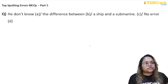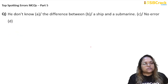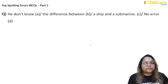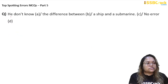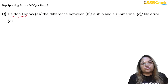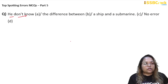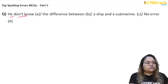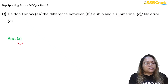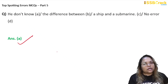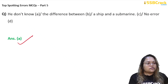Next question: 'He don't know the difference between a ship and a submarine.' This is a basic question. The subject 'he' is singular, but 'don't' is a plural verb — that is wrong. It should be 'he doesn't know.' So option A is our answer — the error was in part A.